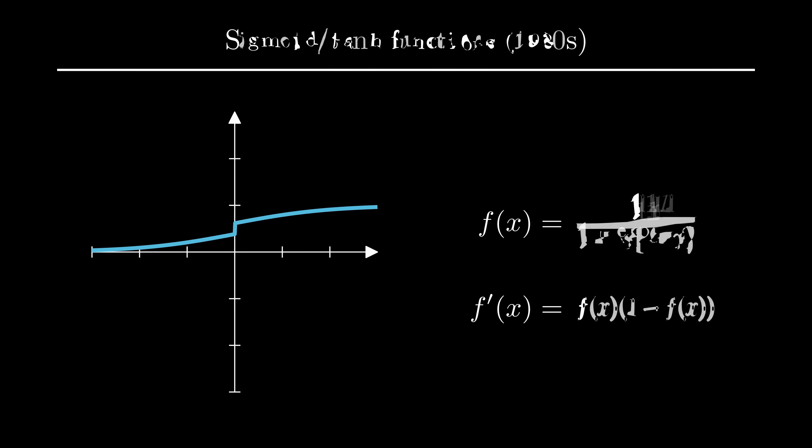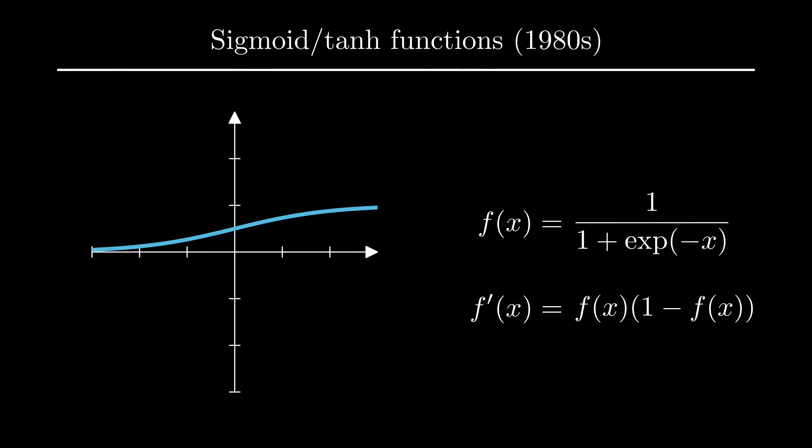After that, the sigmoid and tanh functions became popular, starting in the 1980s. They were chosen because of the rich mathematical framework they are part of, for example in logistic regression.